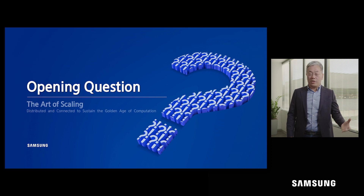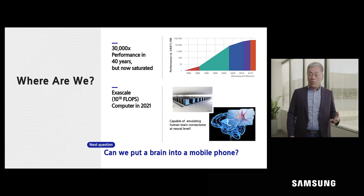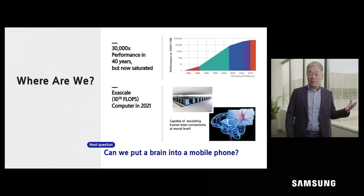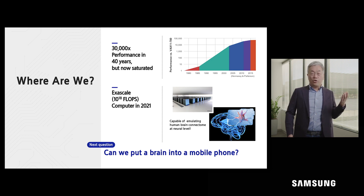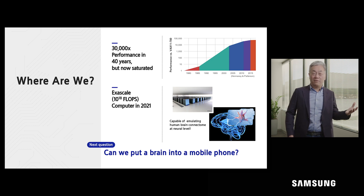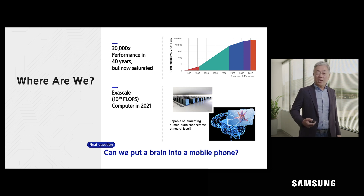The opening question: where are we now? For the last 40 years, we enjoyed exponential growth in performance. However, just like in nature, we are confronting the S-curve — we are entering the realm of saturation. If you look at state-of-the-art exascale supercomputers, we are able to mimic human-level connections. However, the problem is that we don't know the transfer function; that supercomputer might not have real meaning. Popularity of smartphones and their computing power transforms human behavior. How far can this platform go? Can it put a brain into a smartphone? That's the main theme of this presentation.